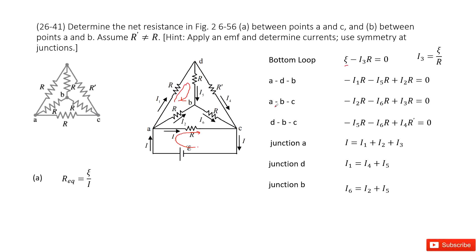Then we look at loop ABC. The current goes through the resistor R — voltage decreases — goes through this R — voltage decreases — goes through this R — voltage decreases — and then goes through this R which increases, because the current I3 and the loop are in opposite directions. So we can write that equation.